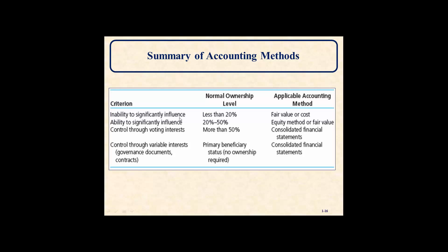Here's a summary chart, which is also in your book — definitely make a copy of it. Inability to significantly influence with ownership less than 20%: use the fair value method, or cost if fair value can't be determined. Ability to significantly influence at 20%–50%: use the equity method, or fair value if criteria aren't met. Control through voting interest above 50%: consolidated financial statements. Control through variable interest via governance documents, contracts, etc., with primary beneficiary status — no ownership is required, but you would still need to consolidate the financial statements.